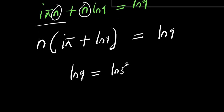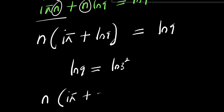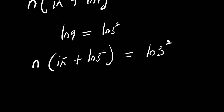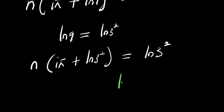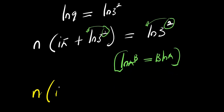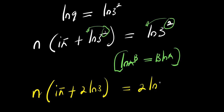So this will simply give us n times i·π plus natural log of 3 squared, equals natural log of 3 squared. And don't forget that natural log of a to the power b equals b times natural log of a. So the 2 comes in front of both. What you are going to have is n times i·π plus 2 times natural log of 3, equals 2 times natural log of 3.